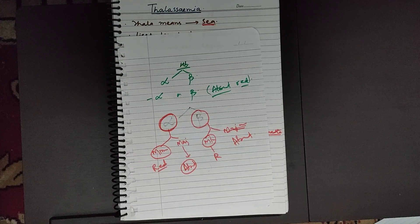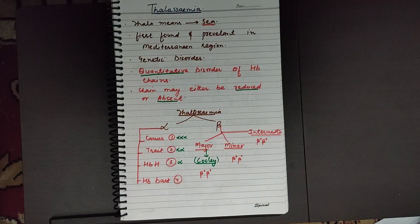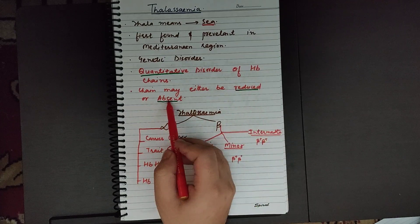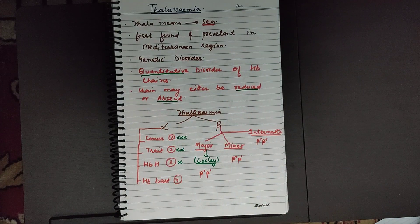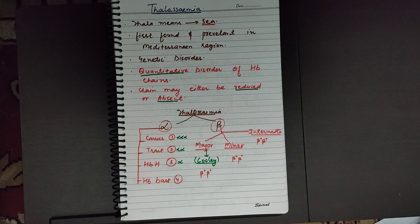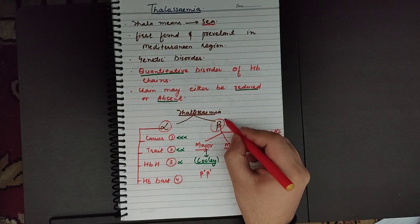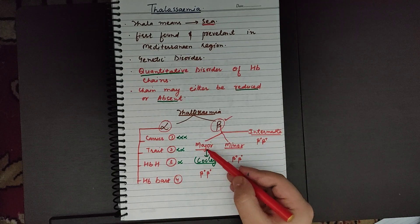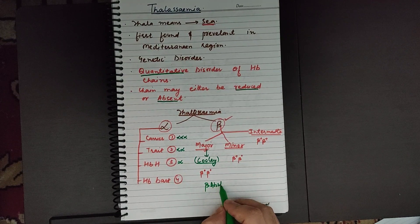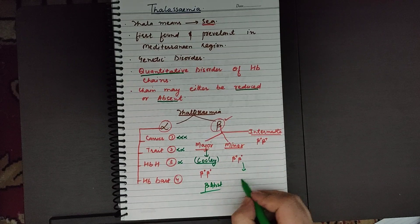Minor means the chains are reduced, and major means the chains are absent. So alpha minor means alpha chains are reduced, alpha major means alpha chains are absent. Similarly, beta minor means beta chains are reduced and beta major means beta chains are absent. Beta thalassemia major is also called Cooley's anemia, and in this condition beta chains are absent.